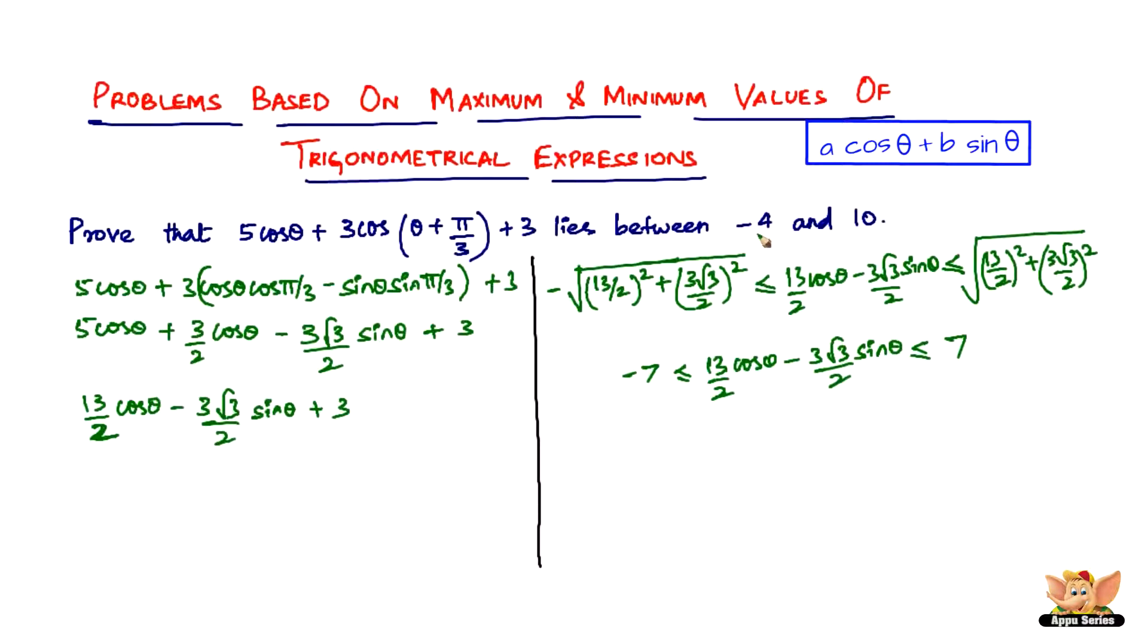We have to prove that it lies between minus 4 and 10. So to get minus 4 here and to get 10 here, all we have to do is just add 3 on both the sides. So minus 7 plus 3, lesser than or equal to 13/2 cos θ minus 3√3/2 sin θ, which is lesser than or equal to 7 plus 3.